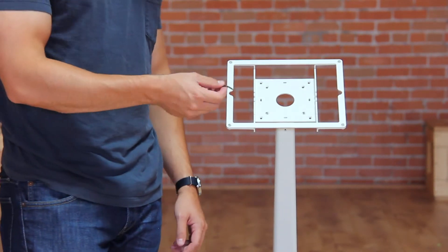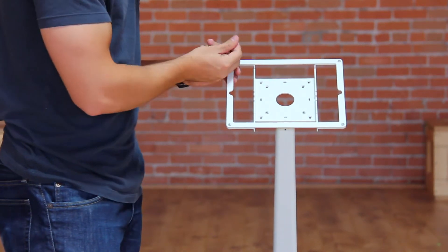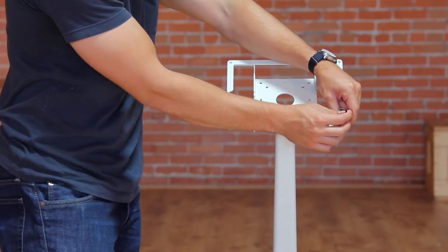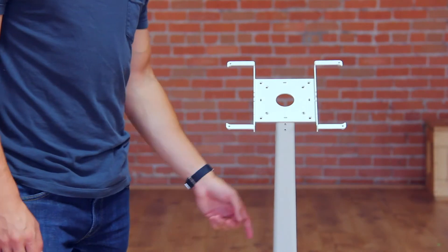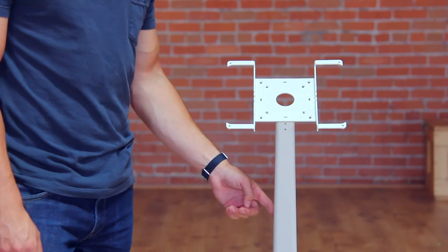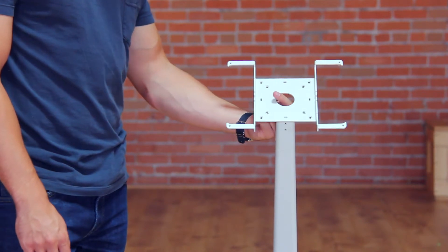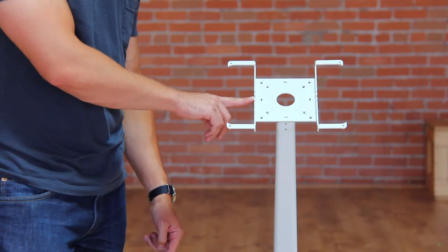Next we're going to take our assembly tool and we're going to take off the front face plate of the frame. If you decided to channel a power cord up through the neck of the kiosk, you're going to want to take the end of that power cord, pull it through the center hole and out the side mouse hole in the back plate of the frame.